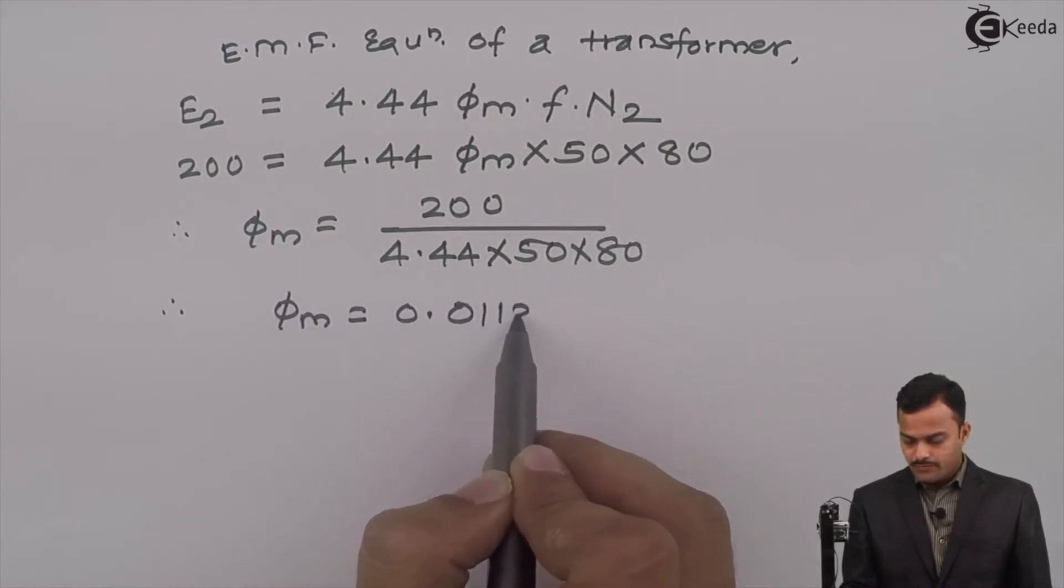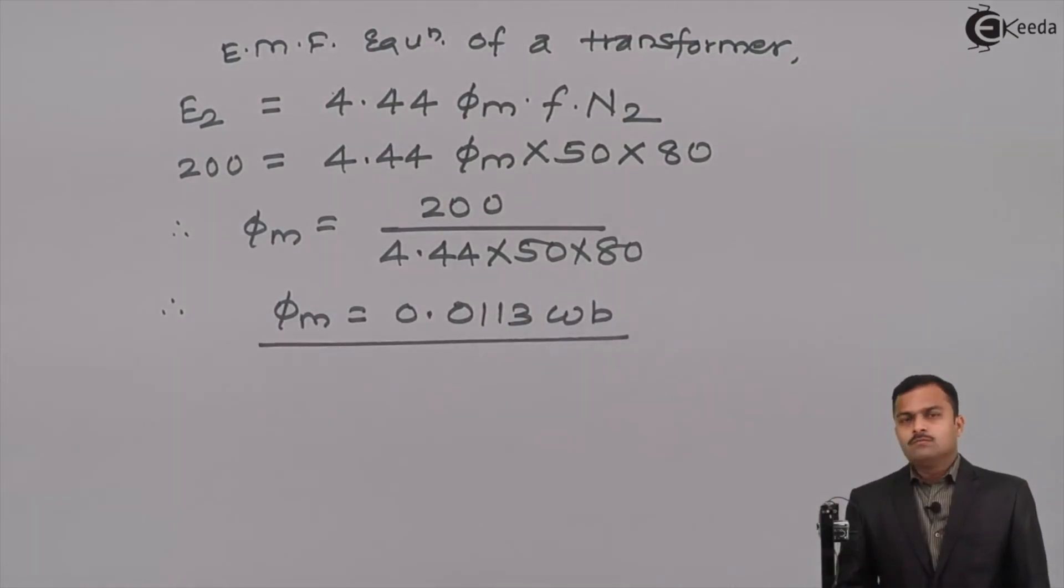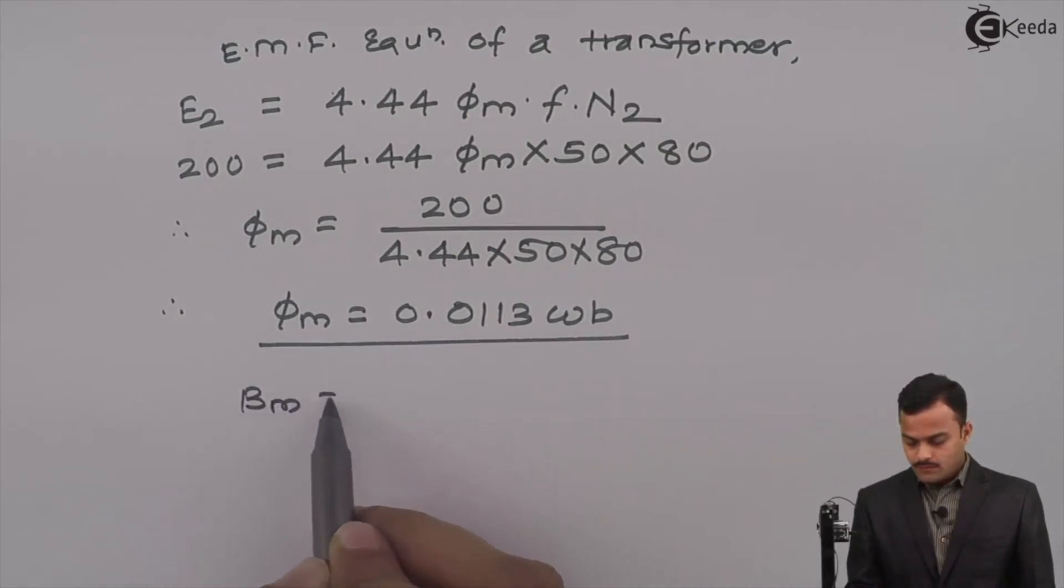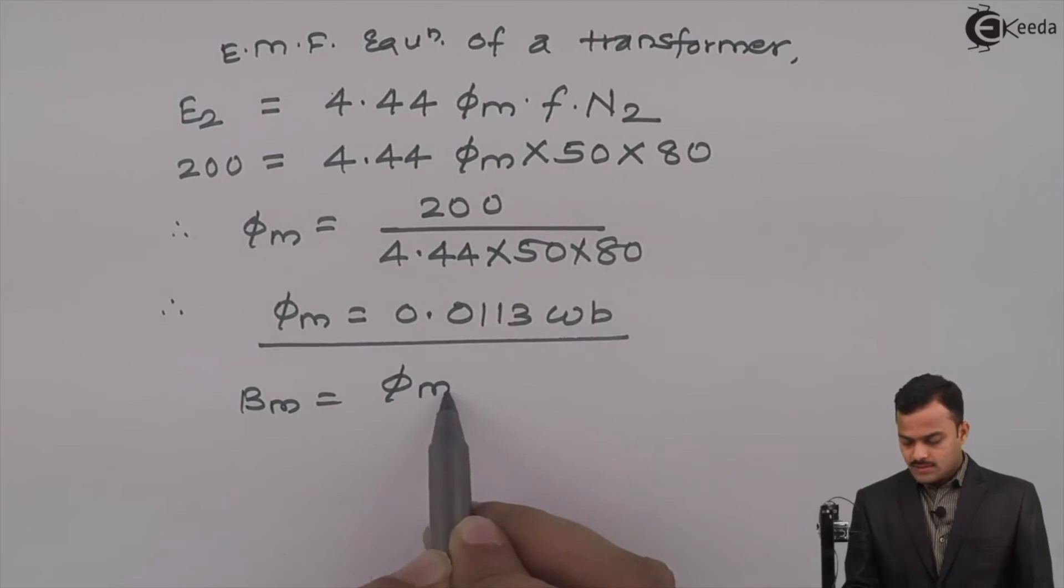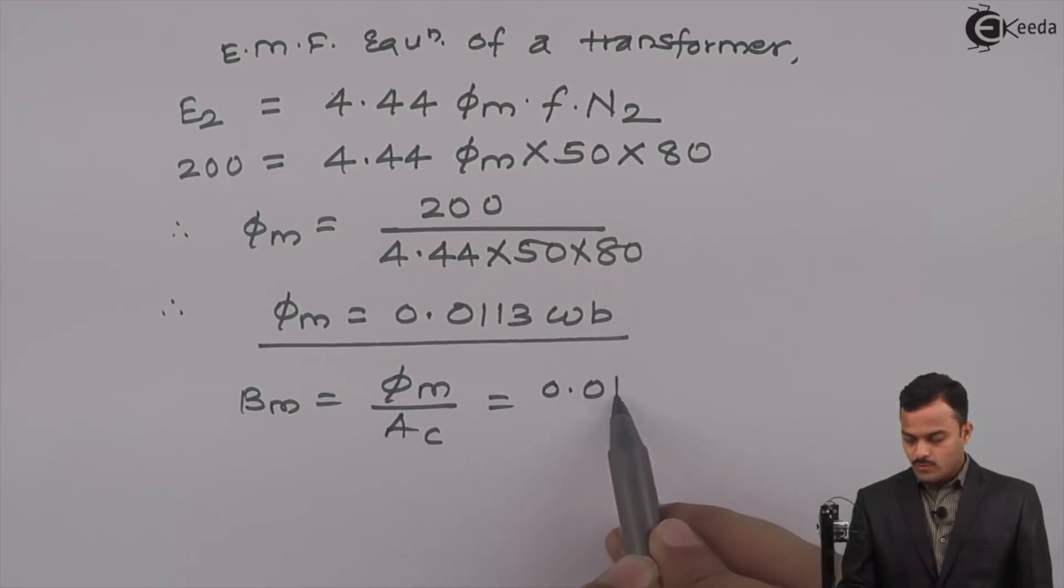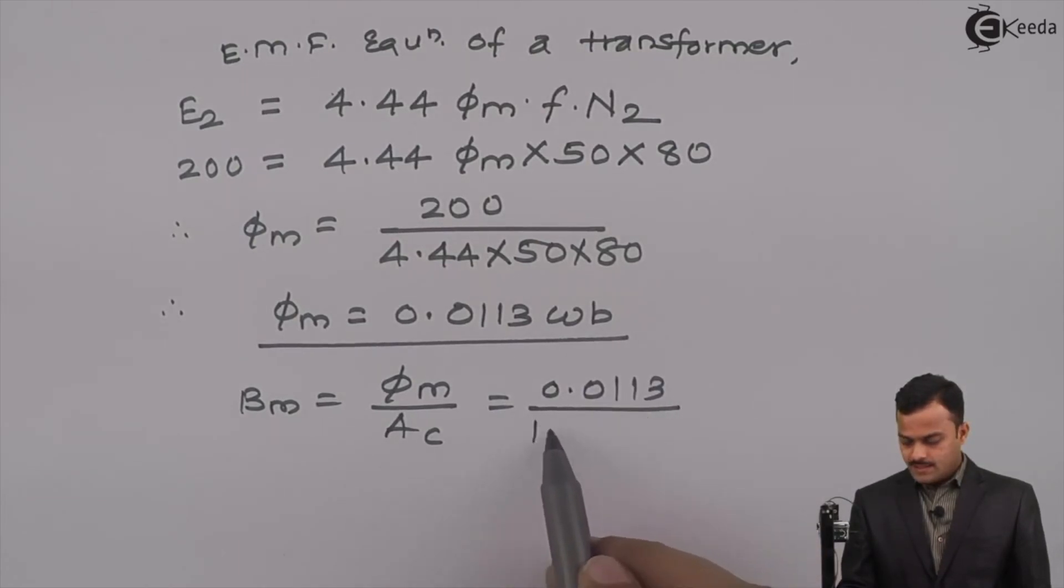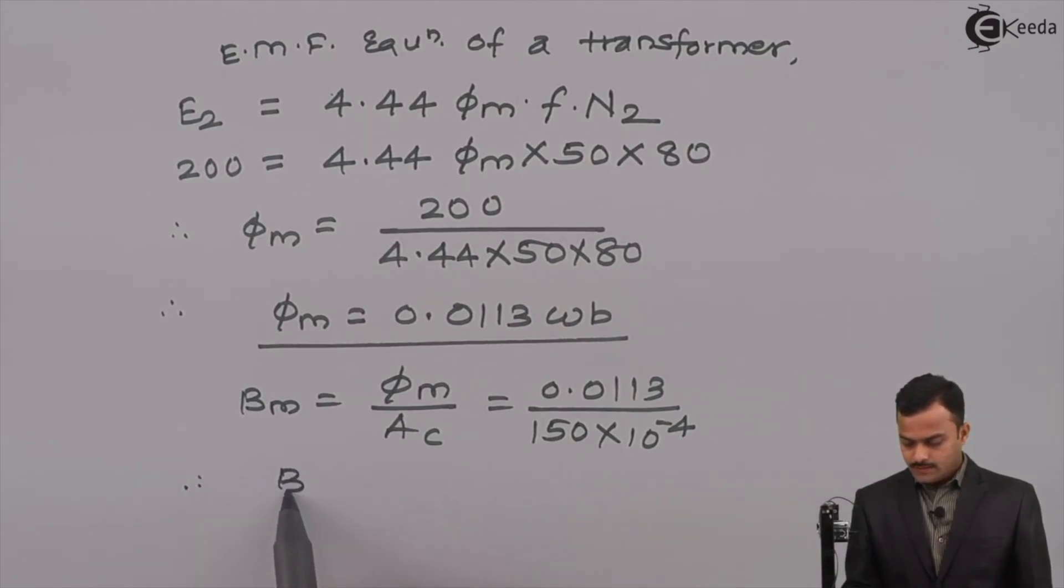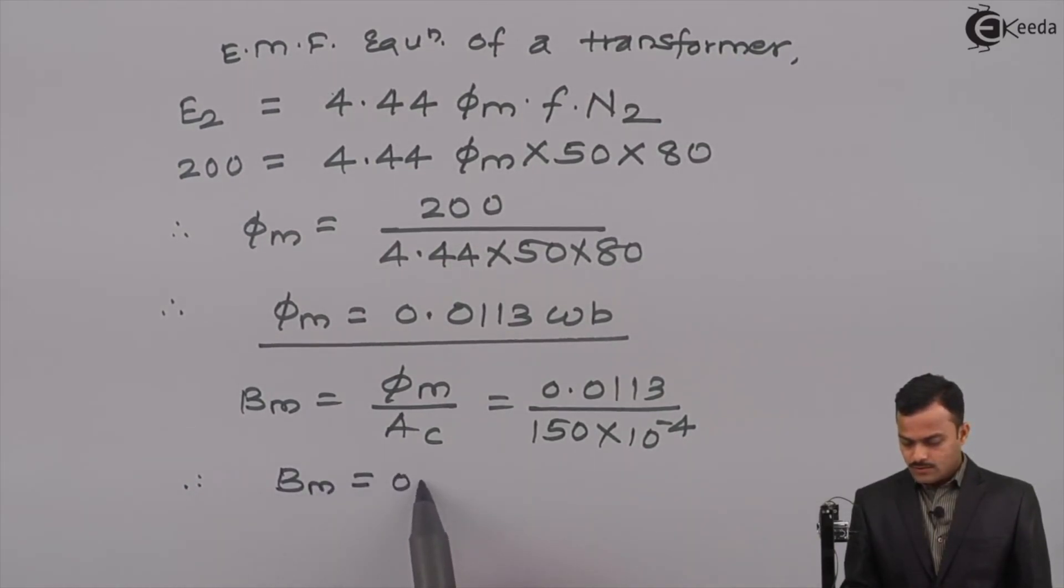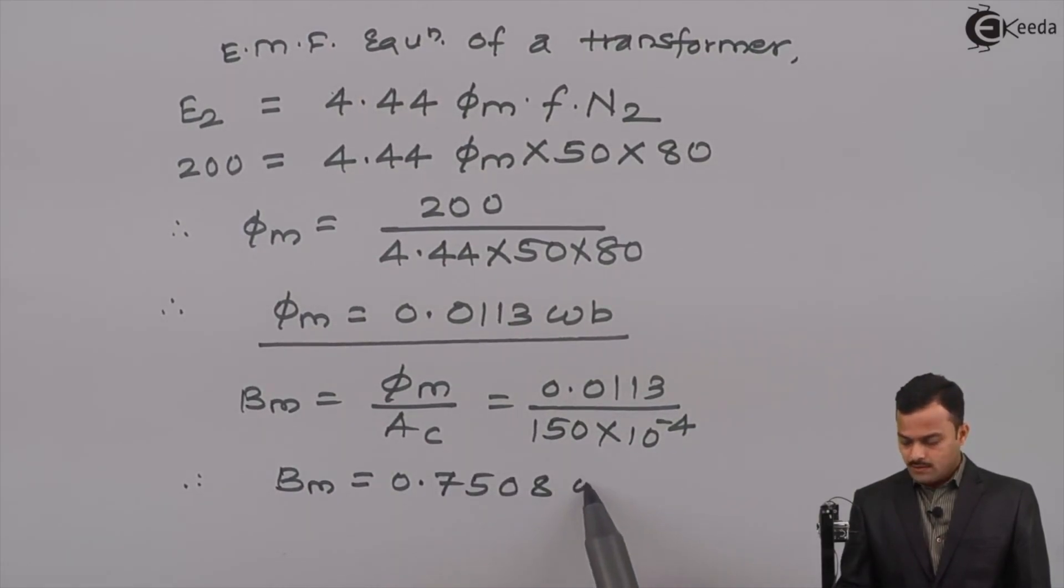But we are supposed to use flux density BM. So BM equals flux upon area of cross section. Flux we have calculated 0.0113, AC is 150 multiplied by 10 raised to minus 4. So if you solve, you will get BM equal to 0.7508. Unit is Weber per meter square or Tesla.